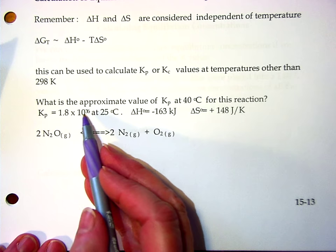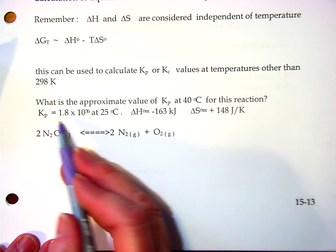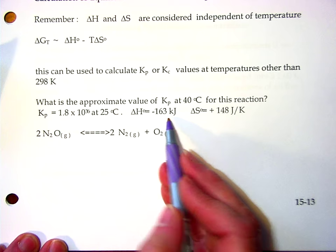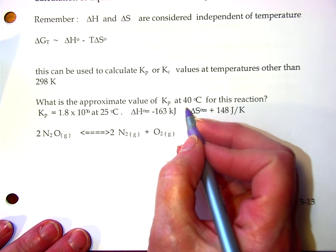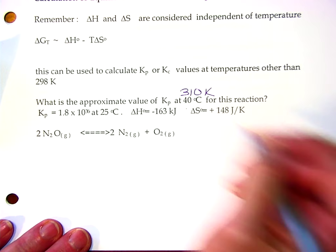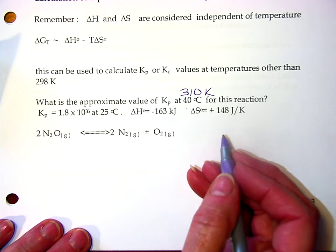What's the approximate value of K sub P at 40 degrees Celsius for this reaction? We know K sub P at 25 degrees C, we know delta H0, and we know delta S0. So we start to think about what do we know? And we always know we need to work in Kelvin, so I'm going to change my 40 degrees Celsius to Kelvin, so that's 310 Kelvin. It's always a good place to start, it's a safe bet, and that'll earn you half a point on the test.